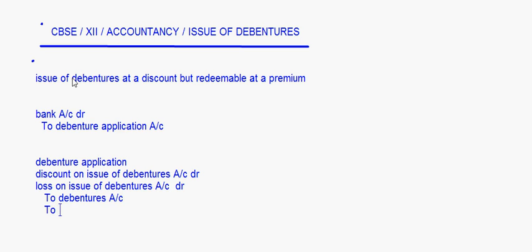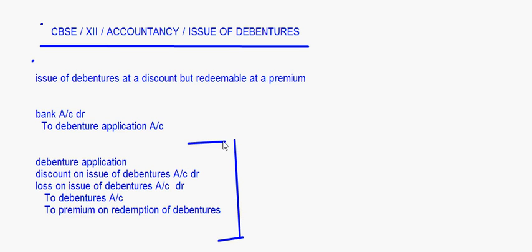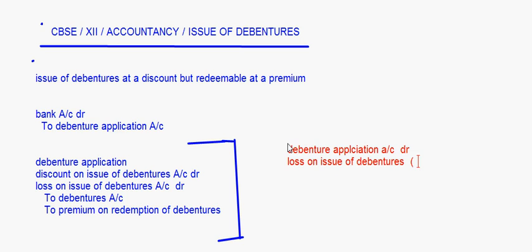Then we will write to premium on redemption of debentures. This last one is the premium payable on redemption. Now this is the actual entry, but this entry can also be written differently — we can combine these two: discount on issue of debentures and loss on issue of debentures. That can be written as debenture application account debit, loss on issue of debentures — this loss is actually the total of the discount plus the premium on redemption.